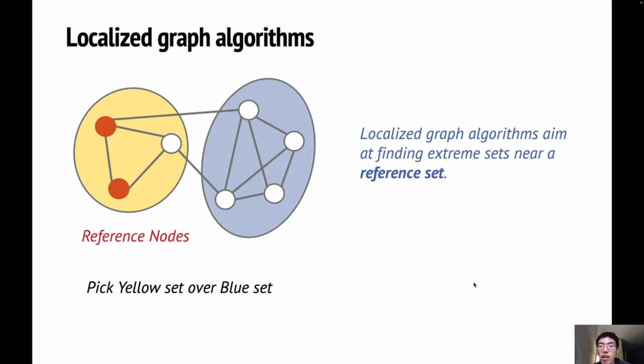Localized graph algorithms are one of the solutions. Now, instead of finding the global optimum, we would like to find a good solution near a reference set. In this way, by varying the reference set, we can get much richer structure information of the graph.